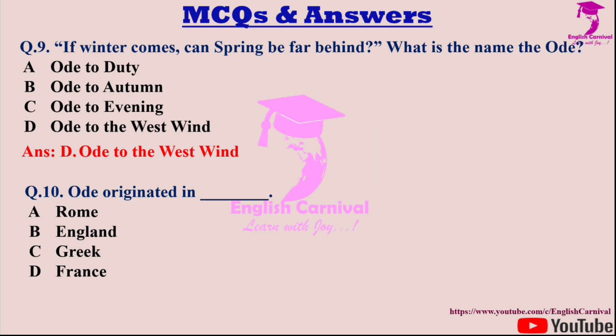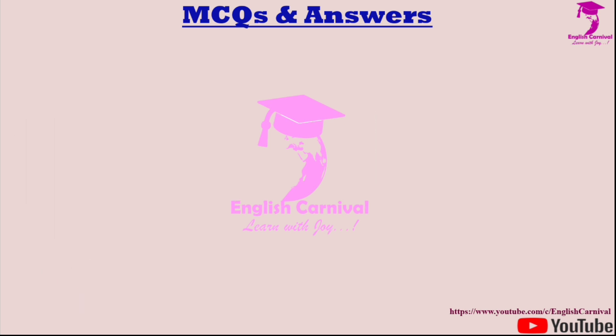Question ten: Ode originated in — dash. Options are A: Rome; B: England; C: Greek; and D: France. Correct answer is C — the ode originated in Greece.